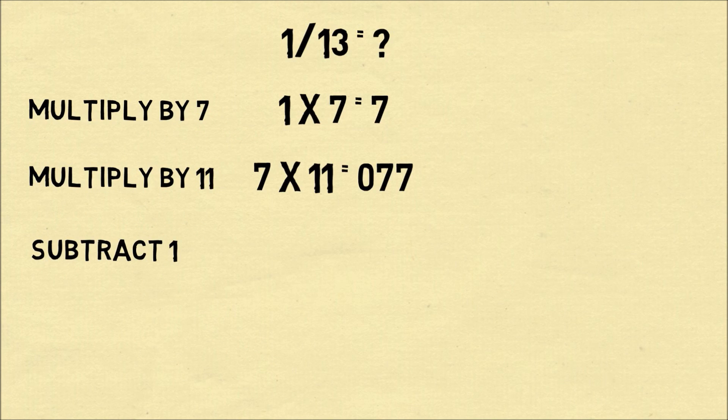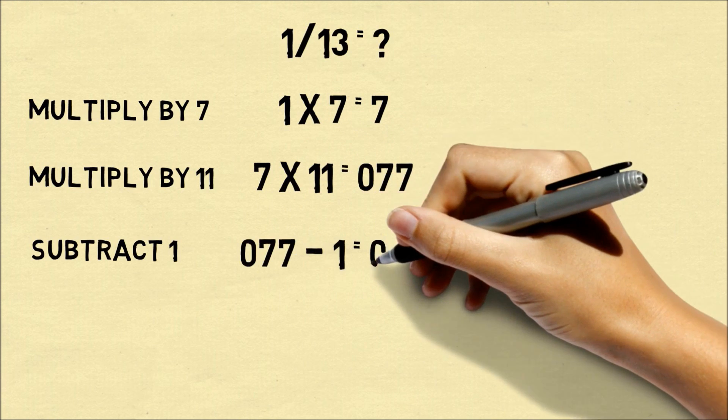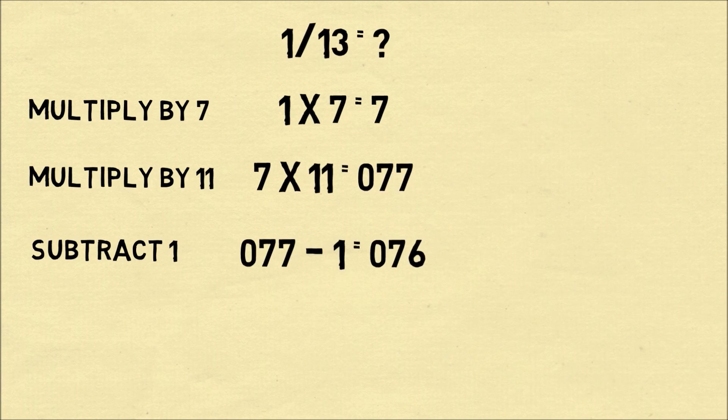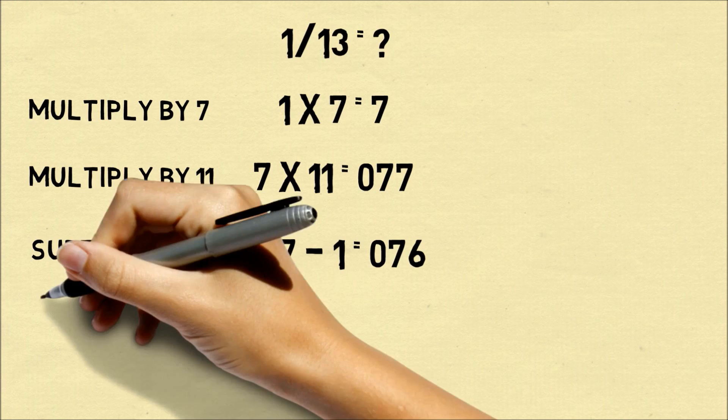Now we proceed with the rest of the steps in our process. So 077 minus 1 is 076. Those are the first three digits.